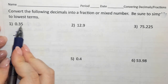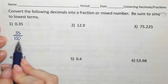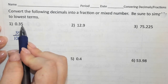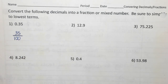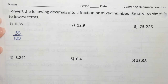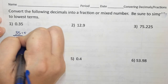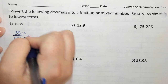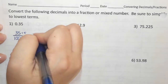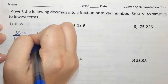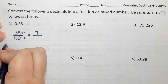Remember, if there are two numbers after the decimal, I need two zeros. Five is in the hundreds place. 35 and 100 — we always want to ask ourselves, will it simplify? I can divide them by five. 35 divided by five is seven.